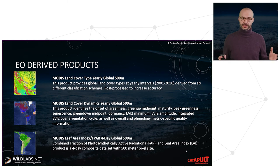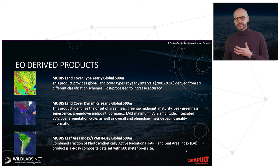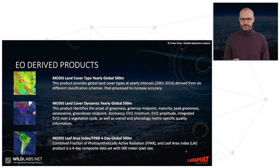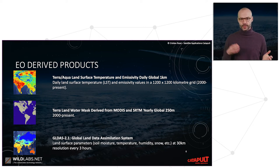MODIS has many associated products, including land cover type at 500-meter yearly global resolution, as well as vegetation dynamics — onset of greenness, maturity peak, senescence, and so on. There is also a leaf area index product at 500 meters, and surface temperature at 1 kilometer from Terra/Aqua, as well as a water mask at 250 meters.